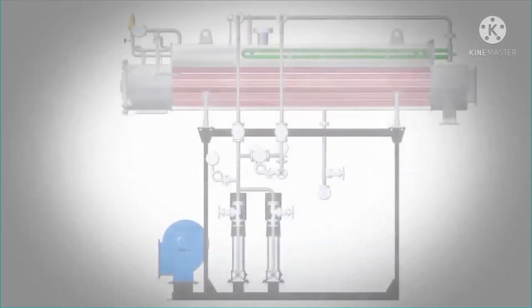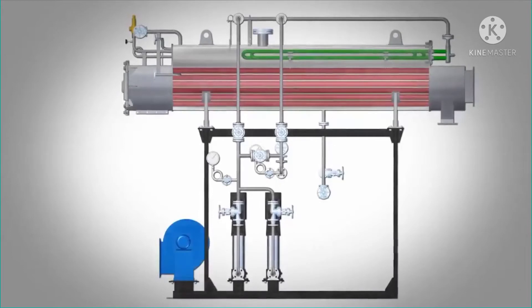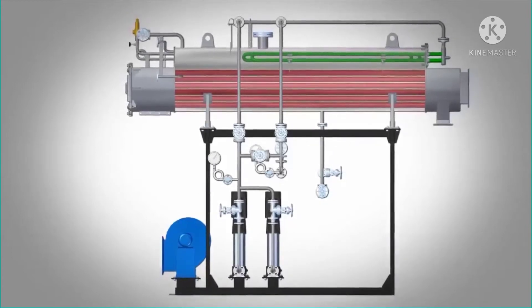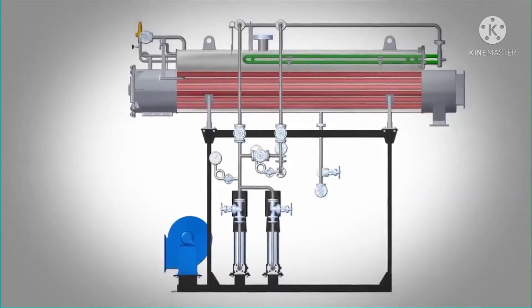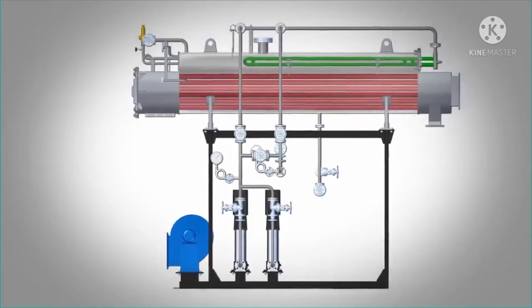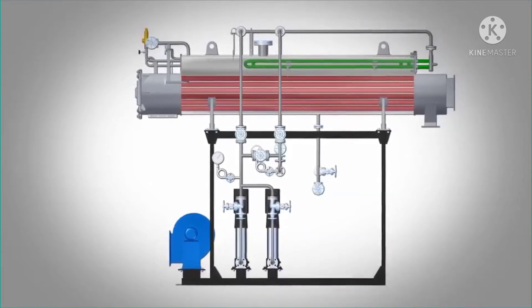The heat recovery unit is used to preheat boiler feed water or the combustion air by using the heat of flue gases. In turn, they increase the efficiency of the boiler.